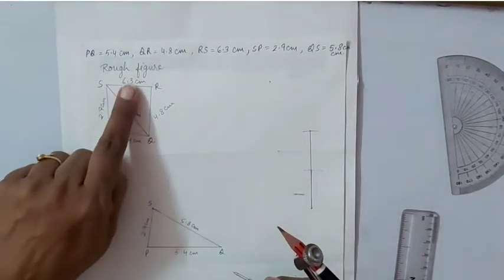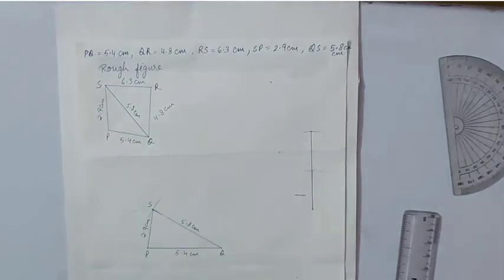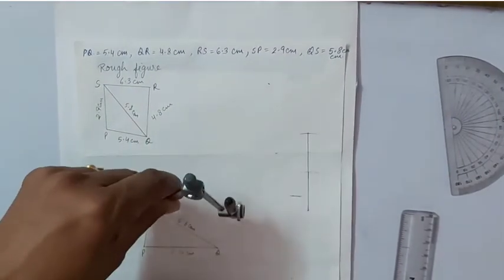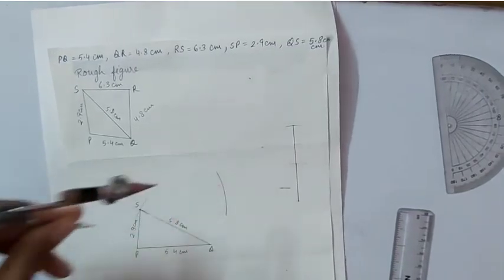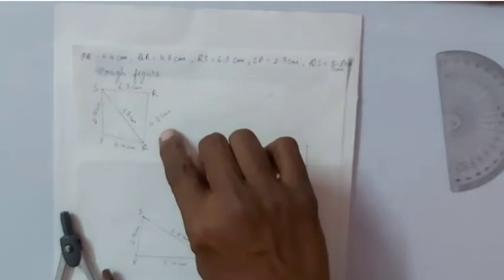After taking required radius, we will keep the compasses on point S because we have to draw the arc for SR. Then we will take the radius 4.8 centimeter for drawing arc for QR.